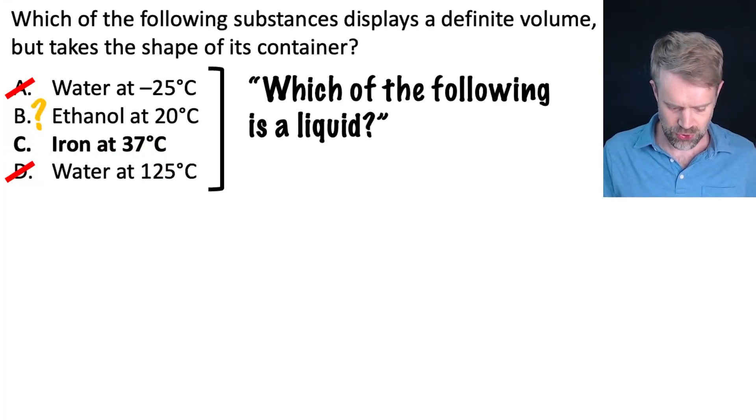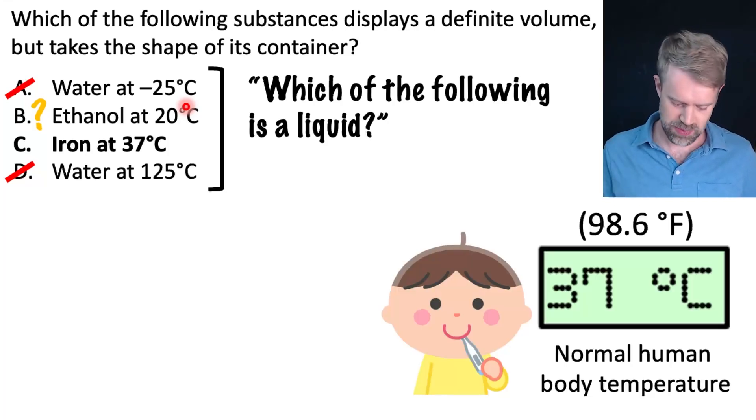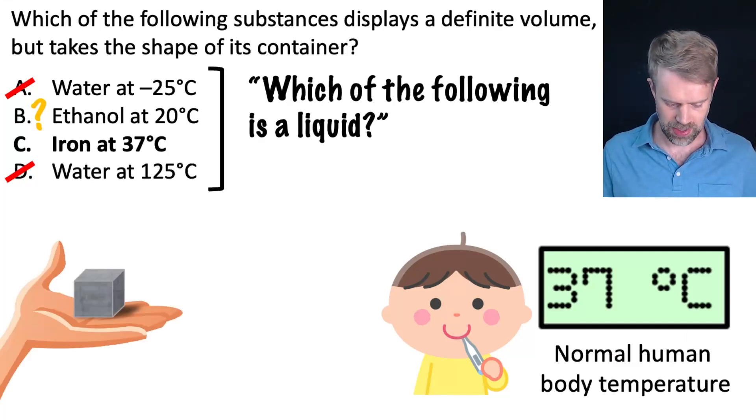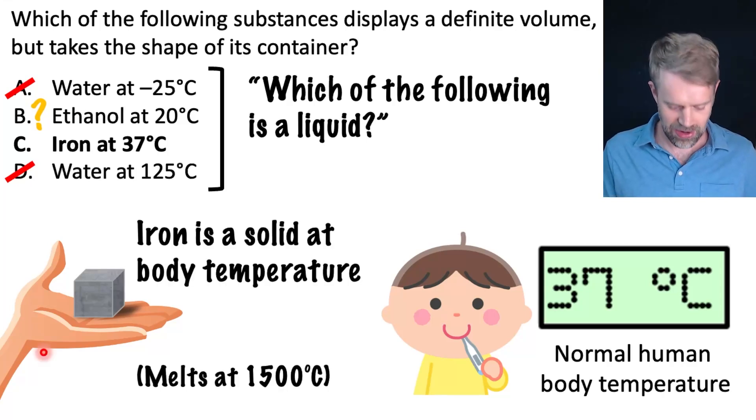Finally, iron at 37 degrees Celsius. Now, do you recognize 37 degrees Celsius here? It's a super important number, super important temperature, you definitely want to have it memorized. And that's because 37 degrees Celsius is normal human body temperature. That's also 98.6 degrees Fahrenheit, but you're pretty much always going to see Celsius on the TEAS. So, 37 degrees Celsius, normal human body temperature. Now, think about this. Iron at human body temperature. What state of matter is that going to be? Iron is going to be a solid. When you hold iron in your hand, you touch iron, it stays solid, right? Iron doesn't melt until 1,500 degrees Celsius. So, iron is definitely going to be a solid at 37 degrees Celsius at human body temperature.